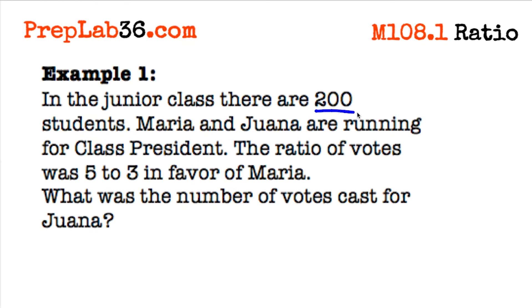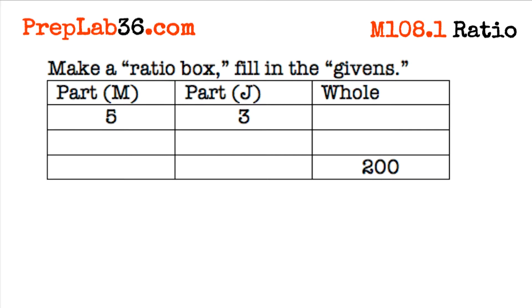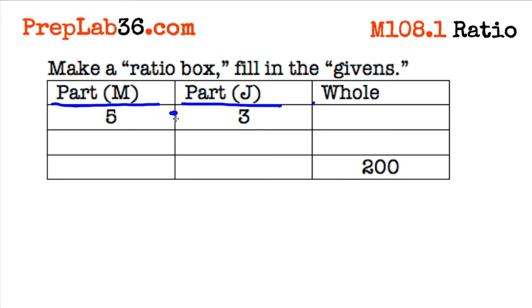Let's look at an example. In the junior class, there are 200 students. Maria and Juana are running for class president. The ratio of votes was 5 to 3 in favor of Maria. What's the number of votes cast for Juana? What was it that the Princeton Review taught us that was so special? It taught us the ratio box. Part to part equals the whole — in our ratio 5 to 3, you add the two parts together and get a whole of 8.